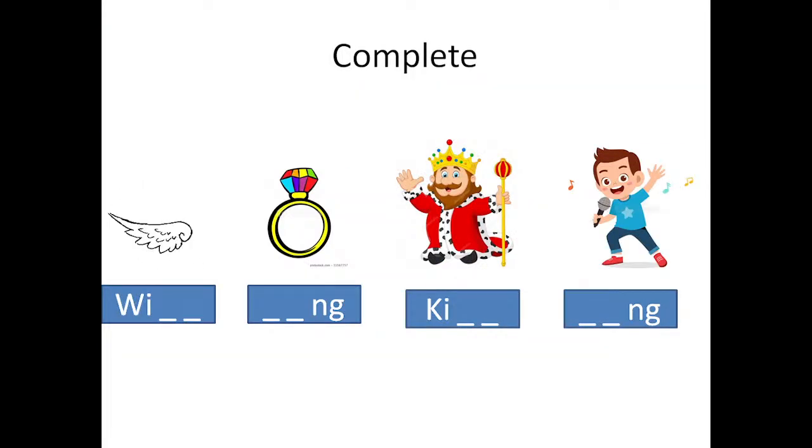Complete the words. What is it? Wing, NG. We should do it like NG, NG. What is it? Ring. Who is he? King. What is it? Sing.